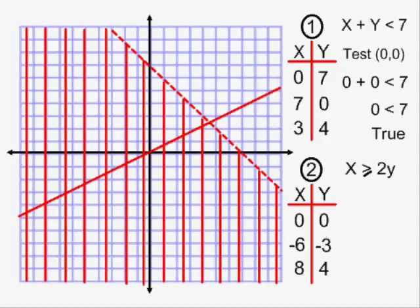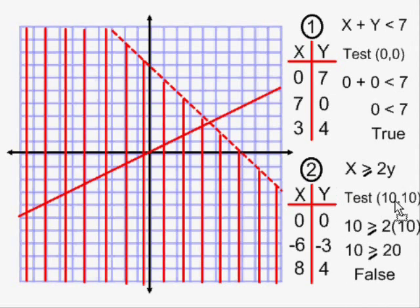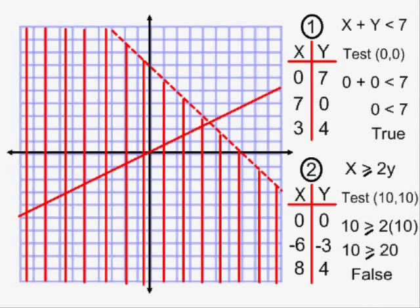Next, I have to do a test point for this line. And since this line goes through (0,0), I cannot use (0,0) as my test point. I am going to test the point (10,10). If I plug 10 and 10 as my x and y into the inequality, I get a false statement. And that means I need to shade the side of the line that does not include the point (10,10).